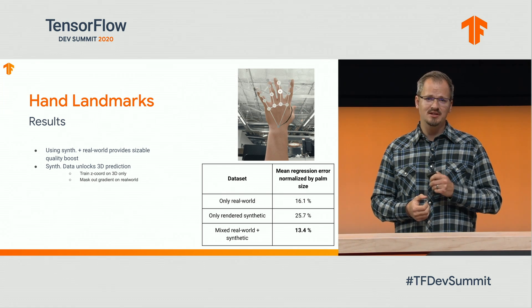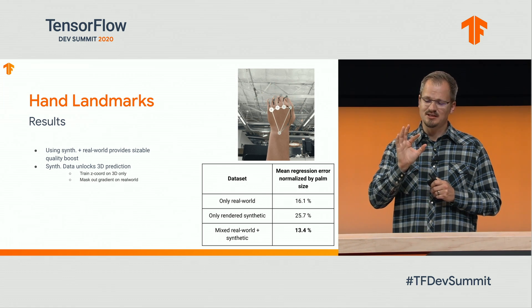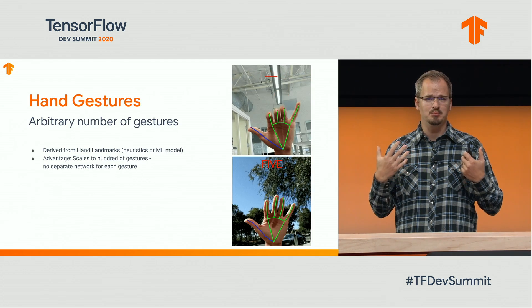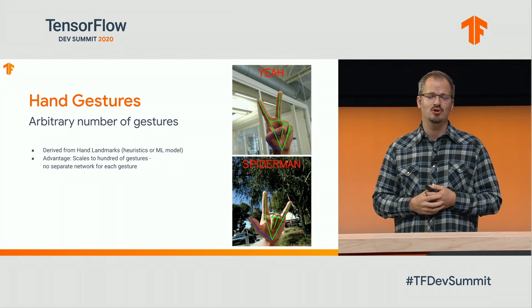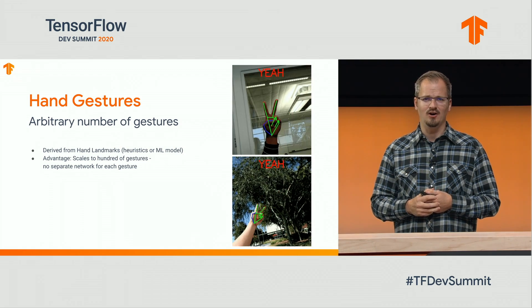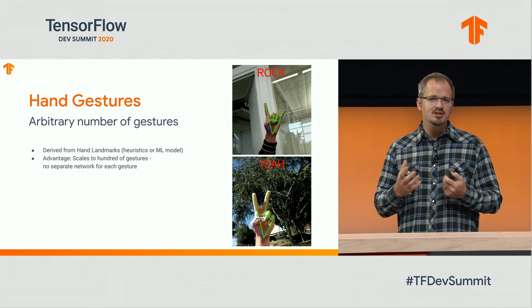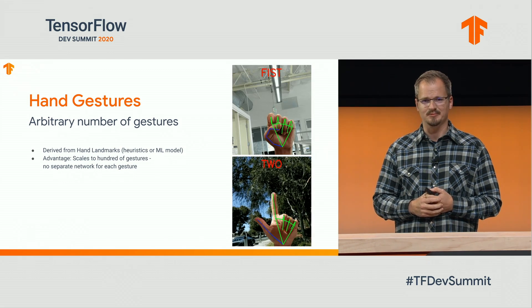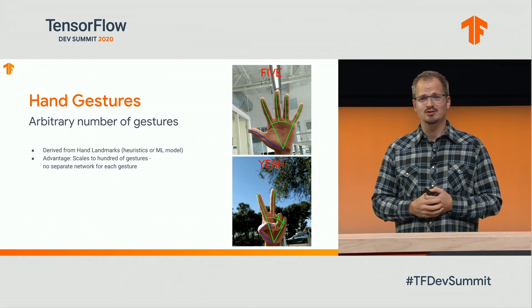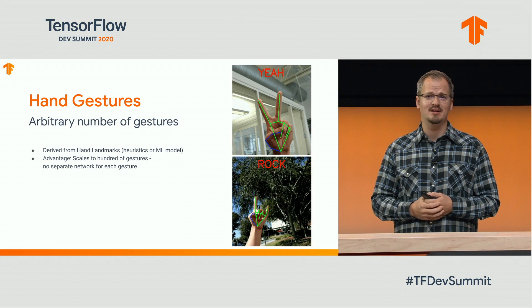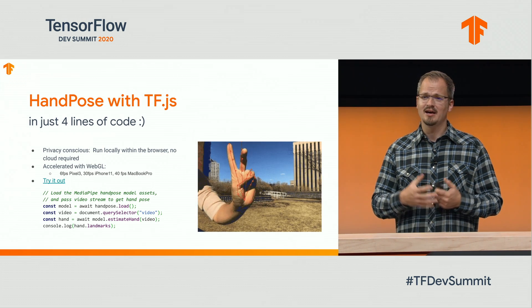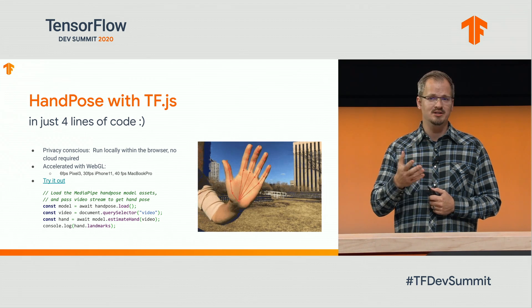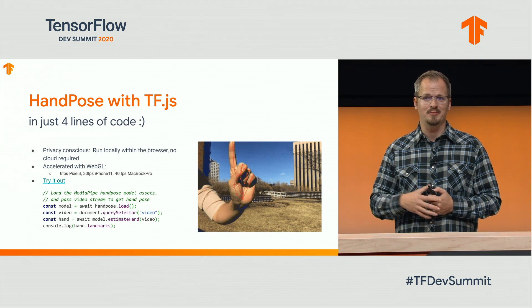One of the nice things about predicting individual coordinates of a hand skeleton is that you can build solutions that return an arbitrary number of gestures. You don't need to train a network for each gesture individually — you can really scale this problem. HandPose is now available in TF.js, a solution with just four lines of code, running in real time on phones as well as on MacBooks.